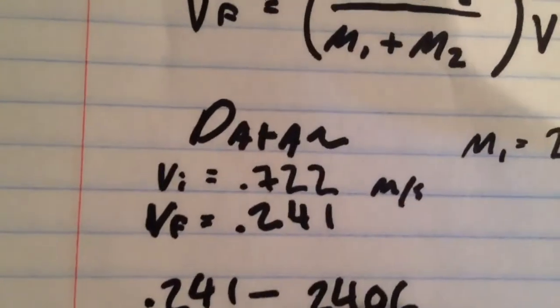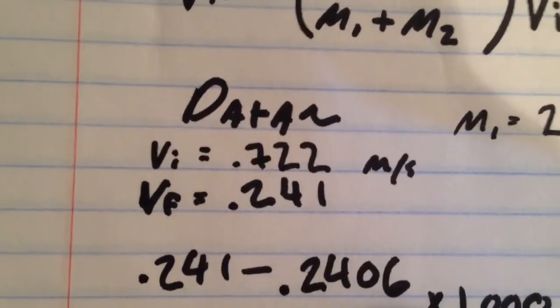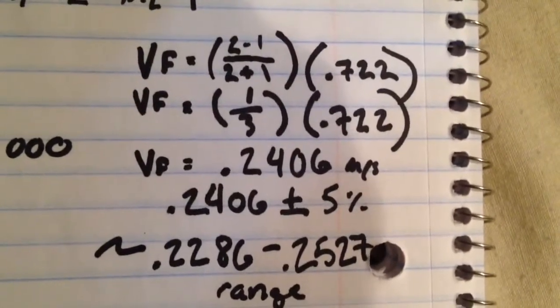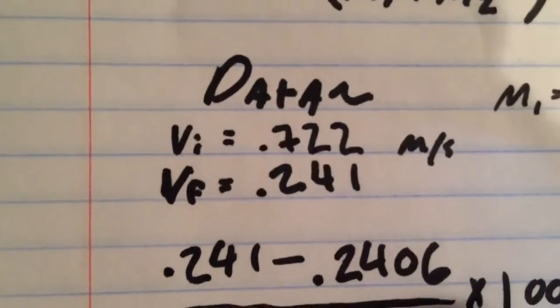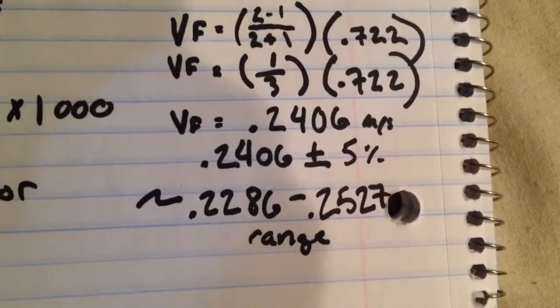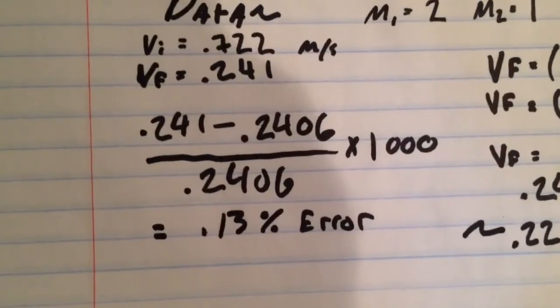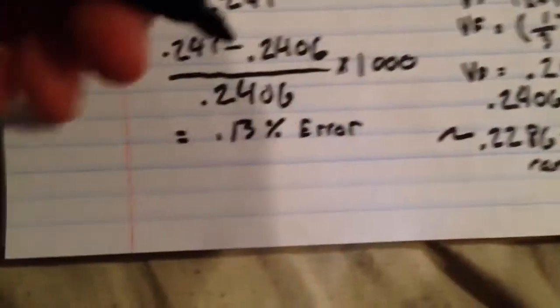The data we collected gave us a velocity initial of 0.722 meters per second and left us with a final velocity of 0.241 meters per second. When plugged into the equation, we are left with a velocity final of 0.2406 meters per second, which is very, very close to the 0.241 that we got in the trial. With the added 5% error, we are given a range of 0.2286 to 0.2527, and our percent error was only 0.13%, which isn't even 1%.